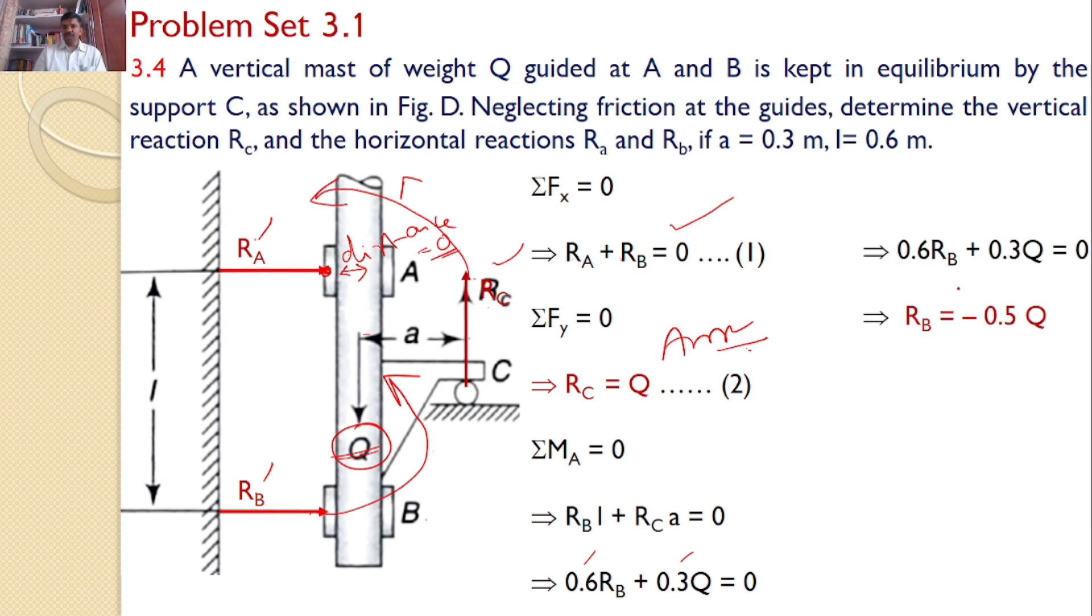Upon simplification, you will get Rb equals minus 0.5Q. That means the assumed direction of Rb is wrong. The Rb will act in this direction, but the magnitude is 0.5Q.